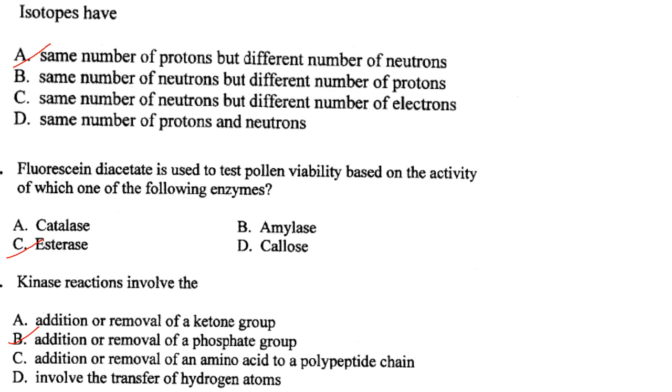Isotopes have the same number of protons but different numbers of neutrons. Answer is option A.